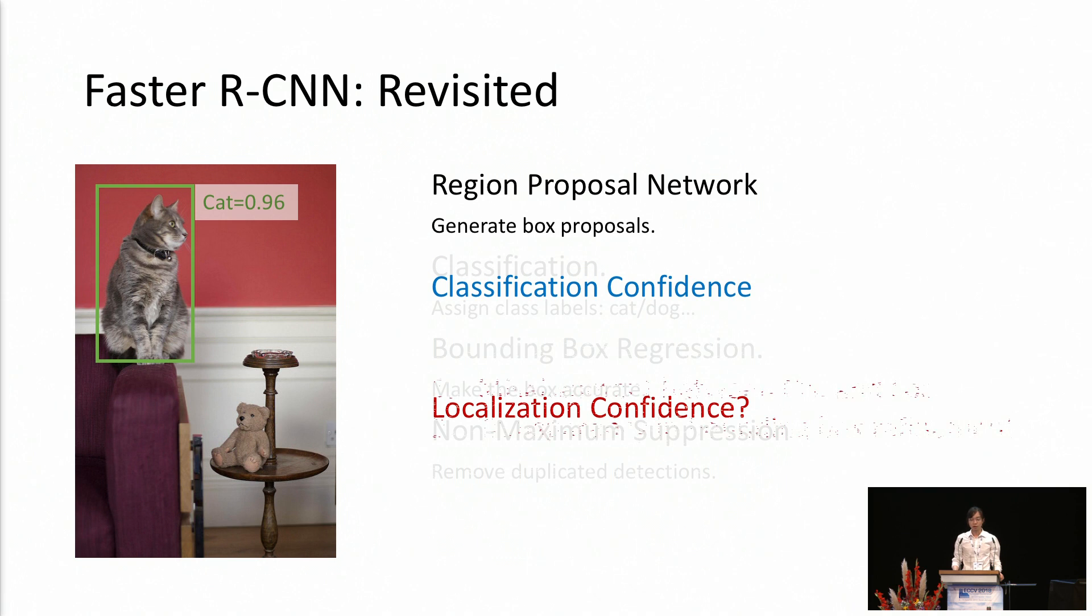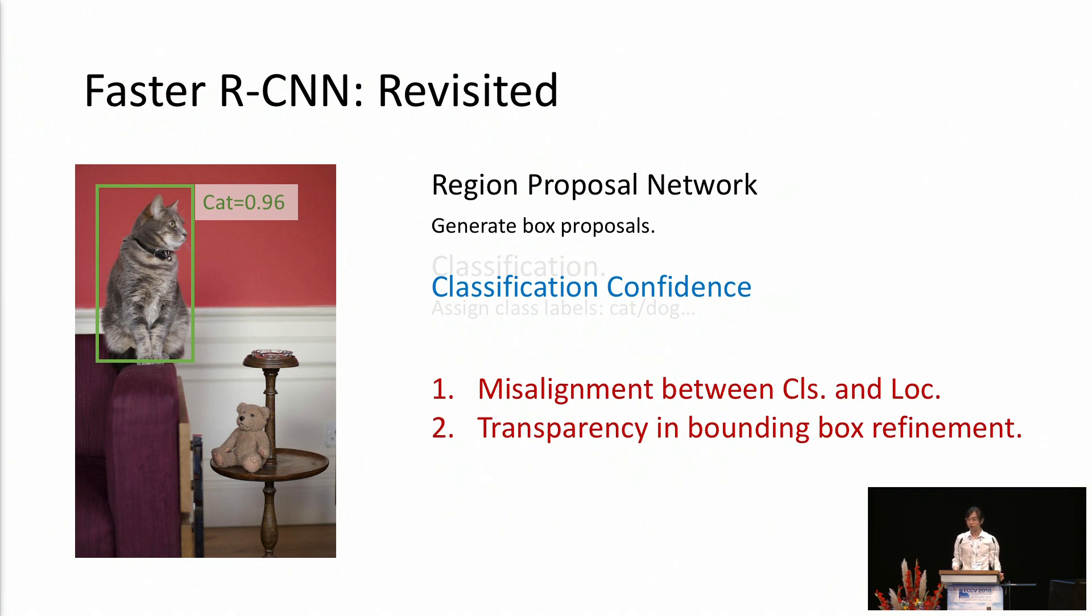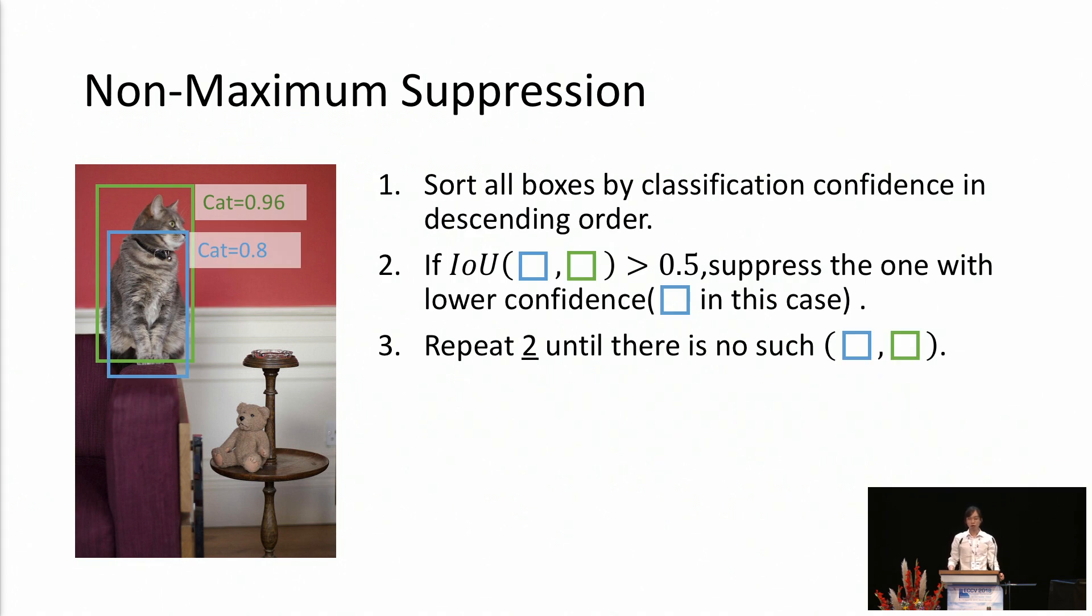We show that there are two drawbacks of the missing of the localization confidence. First, we show a misalignment between the classification and localization confidence and show how this can degrade the performance of the NMS procedure. Next, we show that the missing of the localization confidence makes the bounding box refinement less transparent.